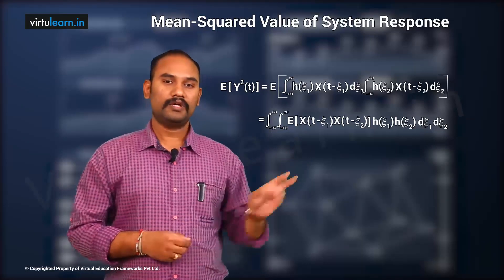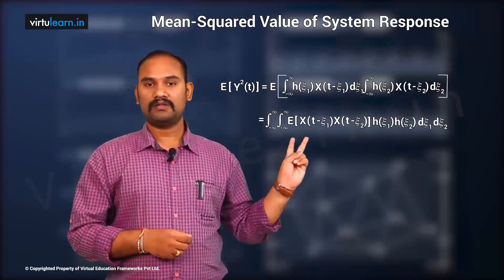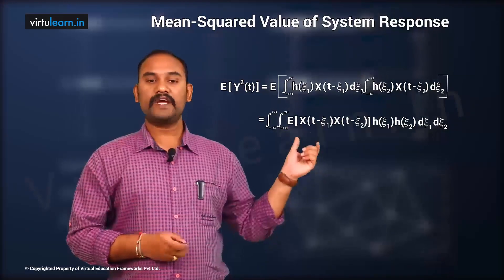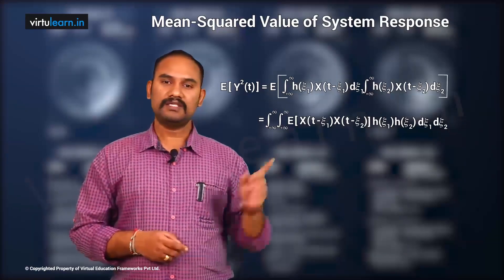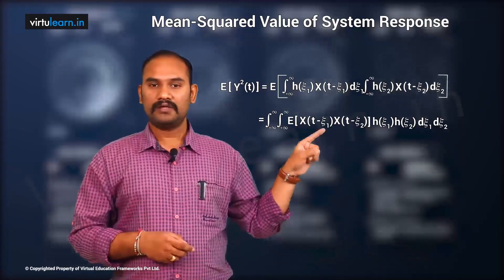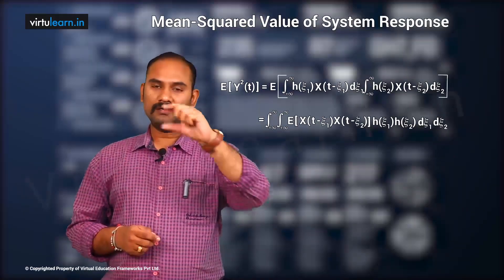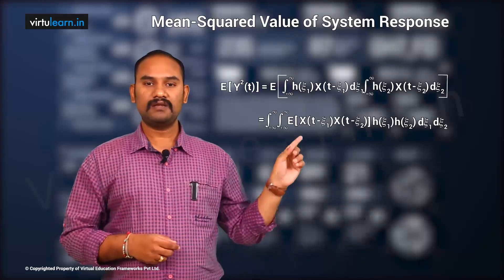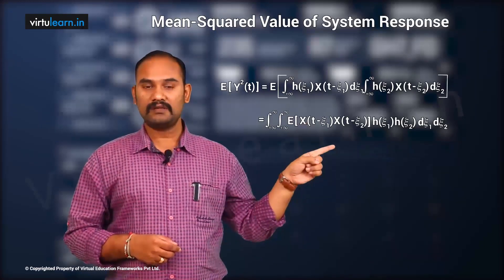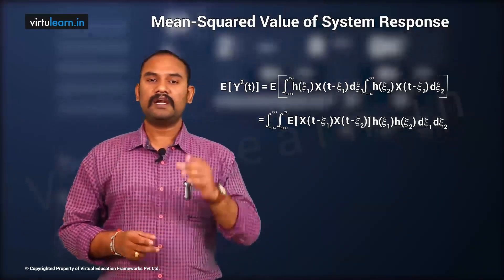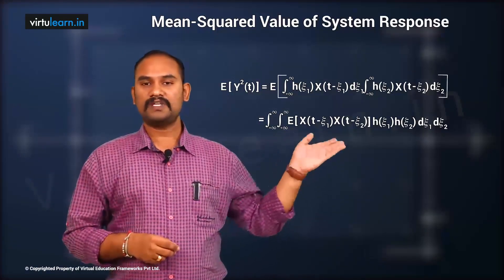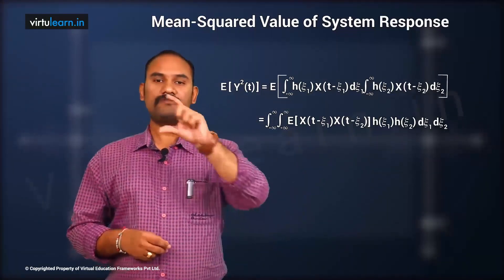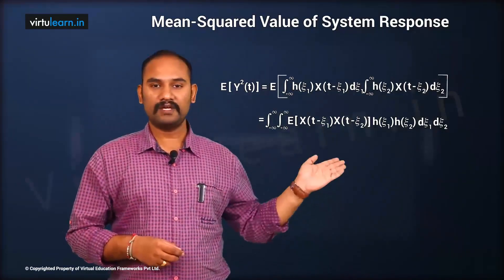This two-dimensional integral contains E[x(t − ζ₁) · x(t − ζ₂)], which is of the form E[x(t₁) · x(t₂)] where t₁ = t − ζ₁ and t₂ = t − ζ₂. This is exactly the autocorrelation format. We have an assumption that the random process is wide-sense stationary.